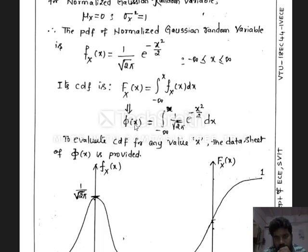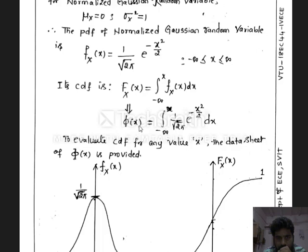The corresponding CDF is given by the integral from minus infinity to x of the Gaussian PDF f_x(x). For the Gaussian random variable, to evaluate this integral a standard data sheet called the probability distribution function is provided, indicated by capital Ψ(x). This gives the value of the integral from minus infinity to x for all values of x between minus infinity and plus infinity. Using these data sheets you can find the value of Ψ(x) and determine the probability of the Gaussian random variable for any given value of x.